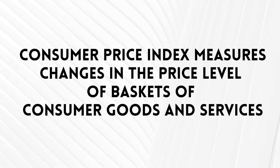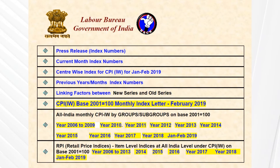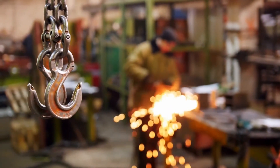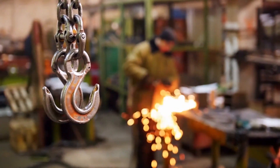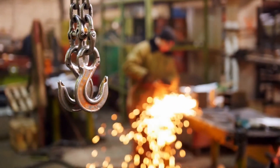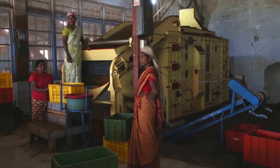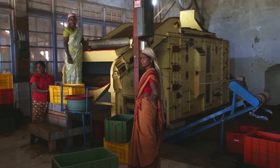Similarly, we have the Consumer Price Index. For CPI, the Labor Bureau of the Government of India sends us data in the form of industrial workers. We then calculate from it. We calculate the CPI of the industrial workers and the CPI of the plantation workers, which is also a very important factor for determining DA.